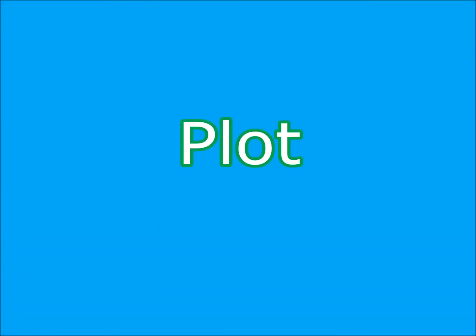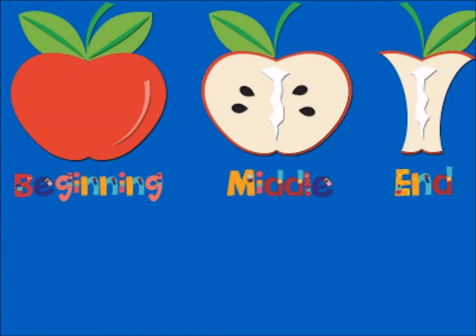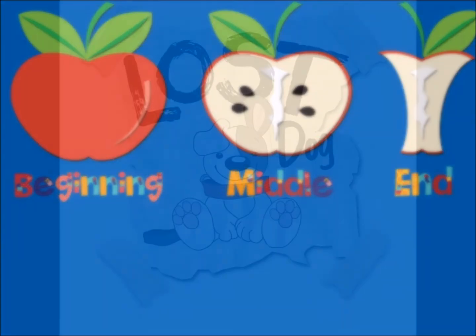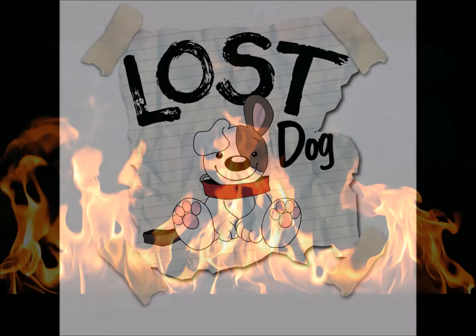Finally, plot. Plot is the action that happens in a story. There is action at the beginning, middle, and end. Usually the action means there is a problem in the story. A lost dog would be a problem. A burning fire would be a problem. But problems also have solutions.